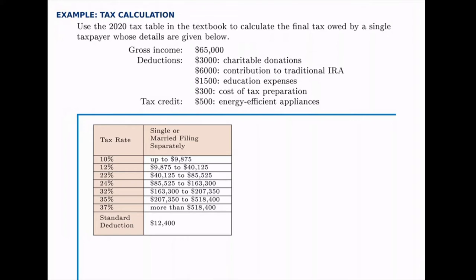So the tax credits will be used at the very end. Now, as far as the deductions go, remember that we can either take itemized deductions or we can use the standard deduction, and we'll pick whichever one is more advantageous — in other words, whichever one ends up being a larger total, that's the one we'll subtract from our gross income.